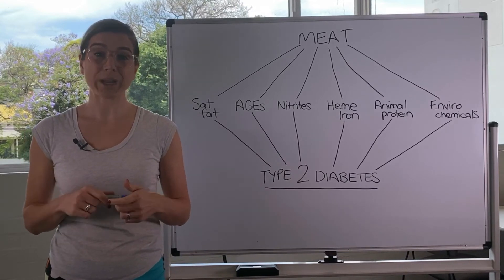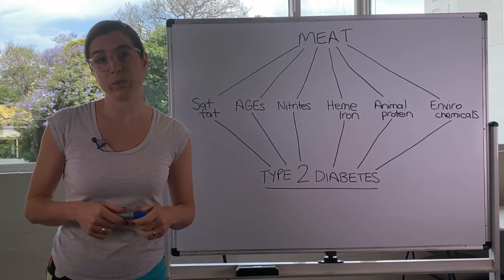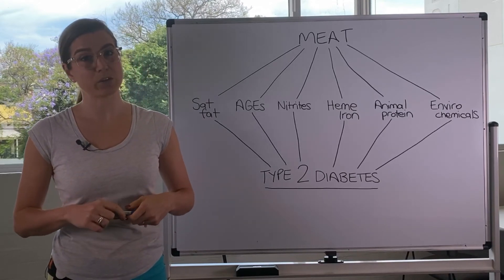Heme iron can also directly damage the beta cells in the pancreas, which can also contribute or lead to type 2 diabetes over time.